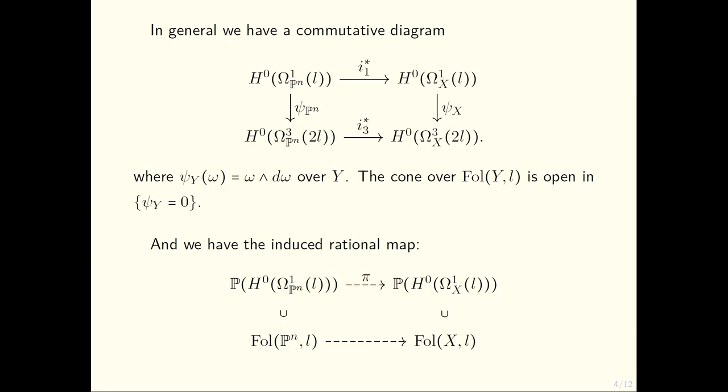You get an induced rational map from the space of forms that restricts to the space of foliations, because the integrability condition commutes with pullback. So integrable things go to integrable things. This is not necessarily a regular map because you can take a form that vanishes in codimension 2 and the restriction can vanish in codimension 1.